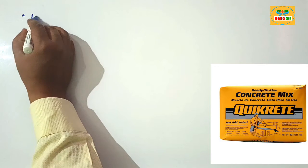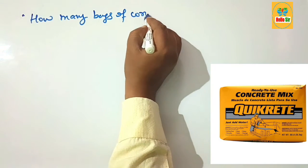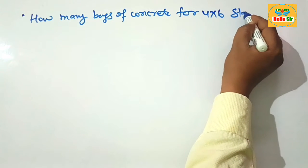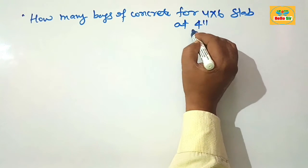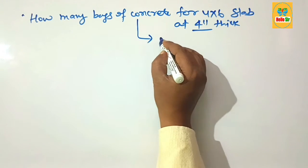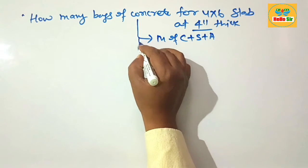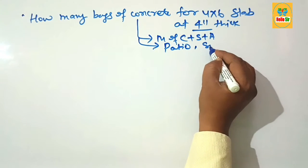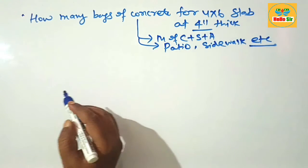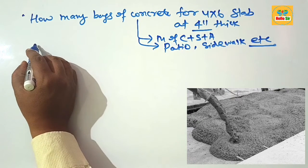In this video we learn about how many bags of concrete are needed for a 4 by 6 slab at 4 inches thick. Concrete is a mixture of portland cement, sand, and aggregate, and it is required for casting of many structures like patios, sidewalks, driveways, ramps, and more.